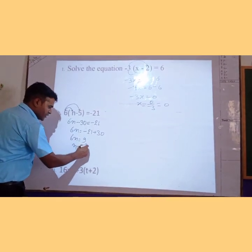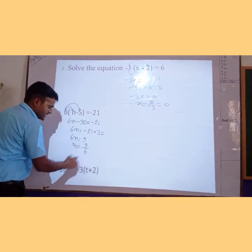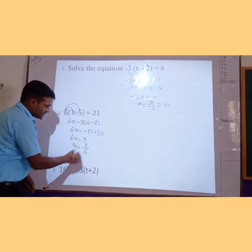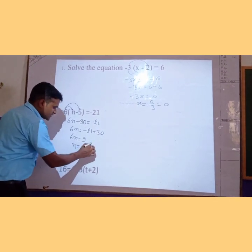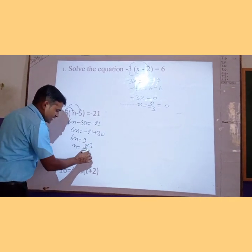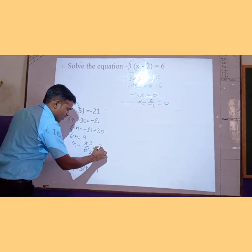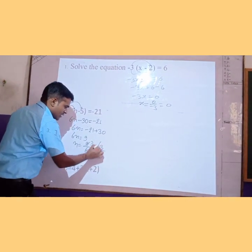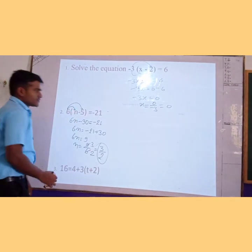Now we have to find the value of n. So n is equal to 9 upon 6. Simplifying, both are divisible by 3, giving 3 upon 2. So the value of n is 3 upon 2.